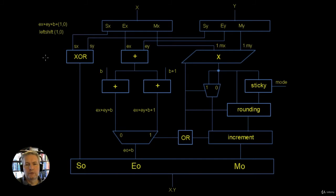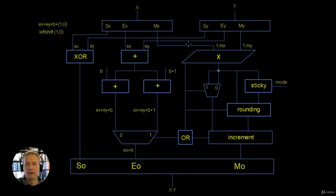The simplest section is going to be our sign bit. In order to generate our final sign output — I've called it large S and O for output, so this is the sign of the output — we're going to have to take the sign of X and the sign of Y and exclusive-OR them together. The final output of that exclusive-OR will be our sign for the output. That's relatively straightforward.